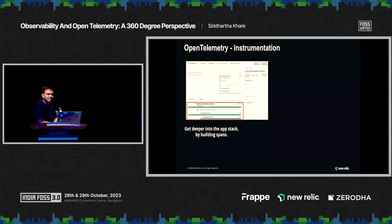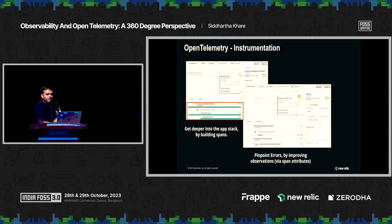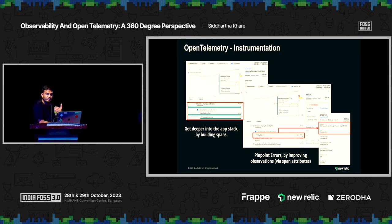Once I have all this data, how is it helpful to me? Once you export this data, you will be able to dig deeper into your application stack with respect to building spans. Once you have those spans, you can pinpoint the errors in your application. And if you are sending custom attributes, you can see an example where the problem is happening — such as a pin code issue — and you will see the value of the pin code as well. That's how in-depth you can go with OpenTelemetry.